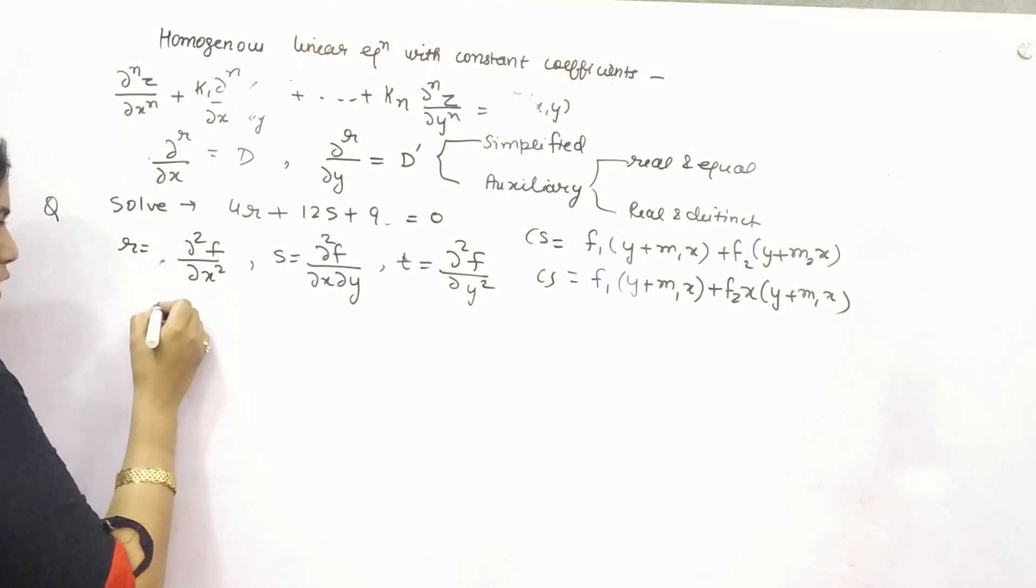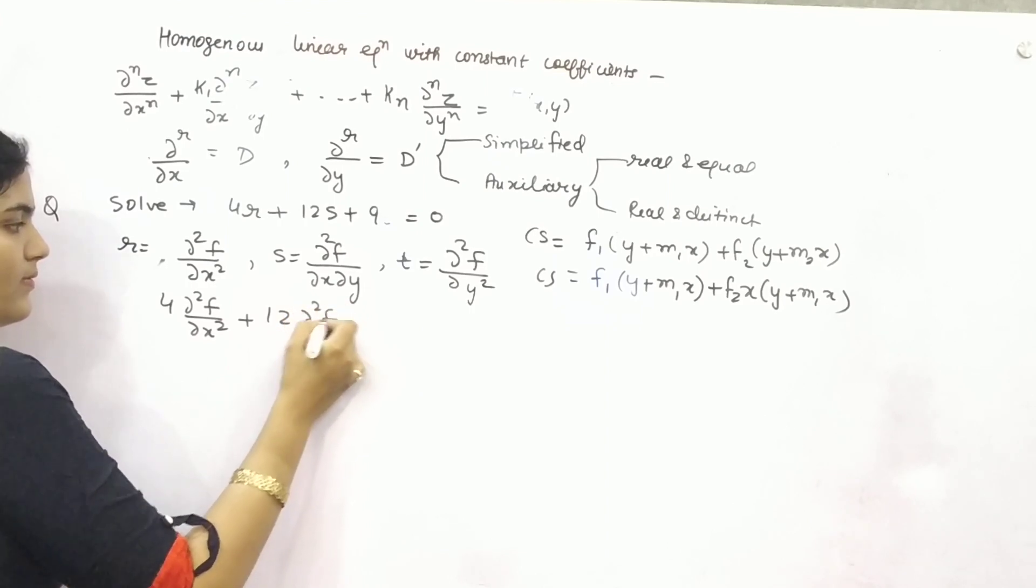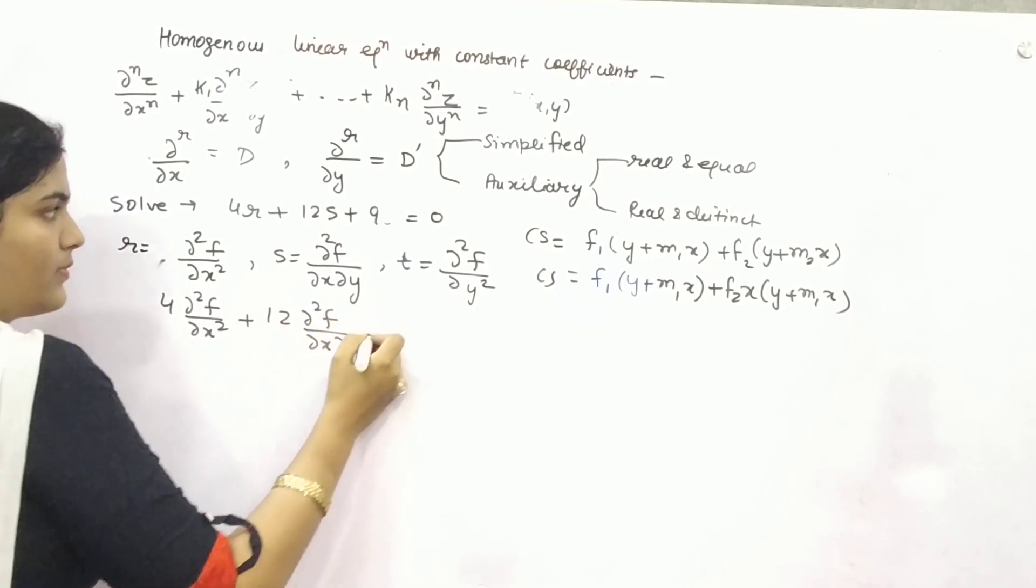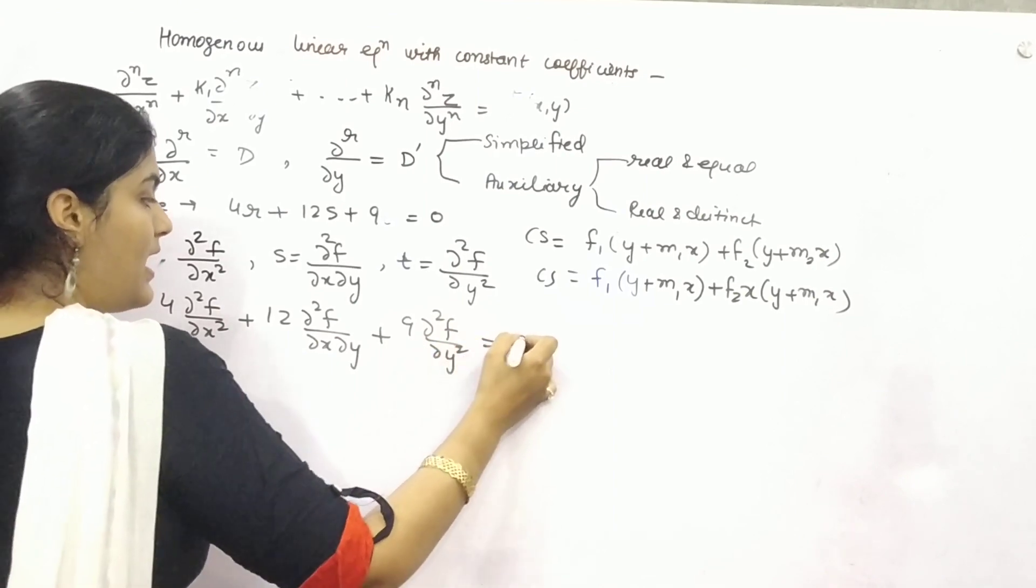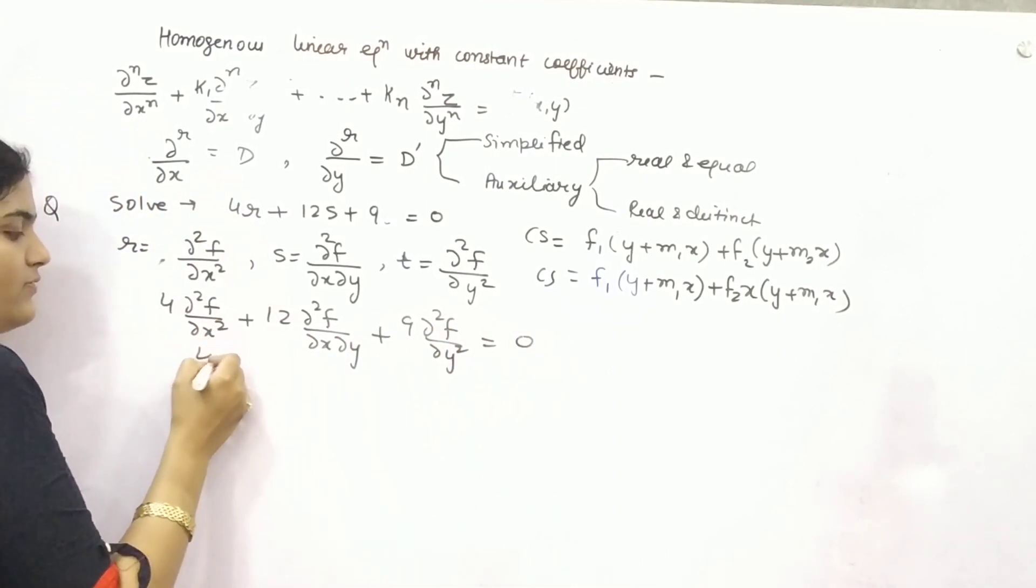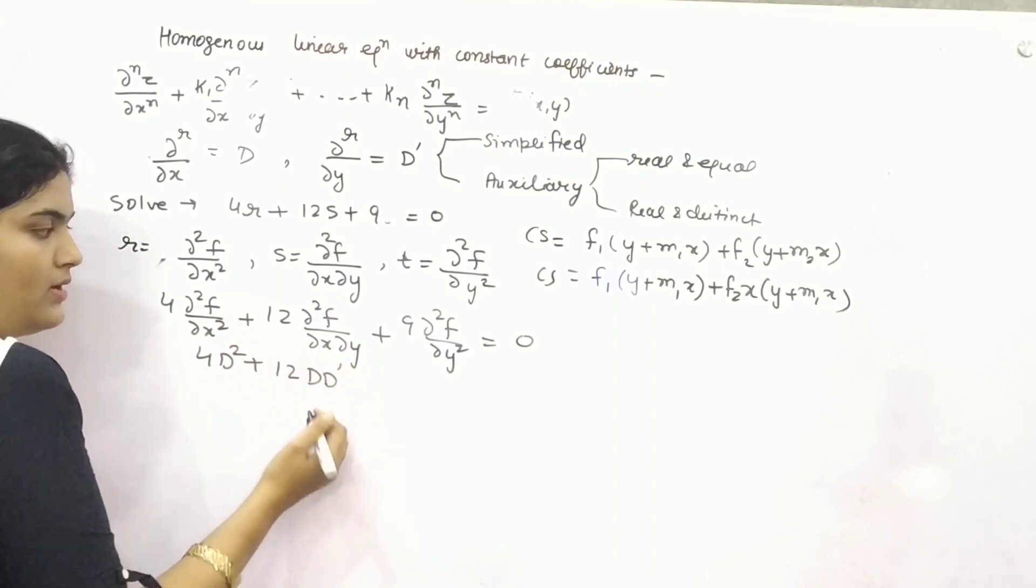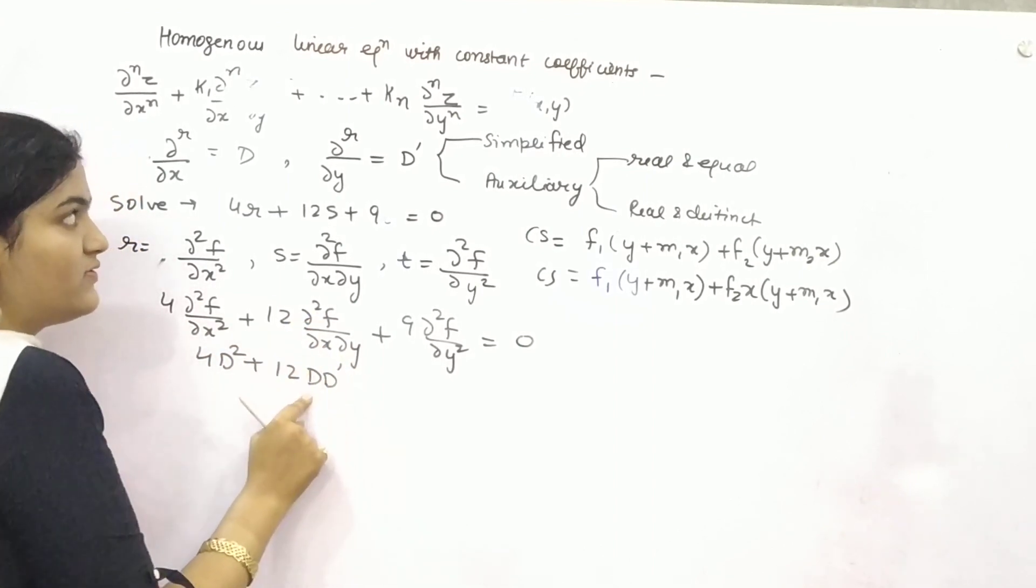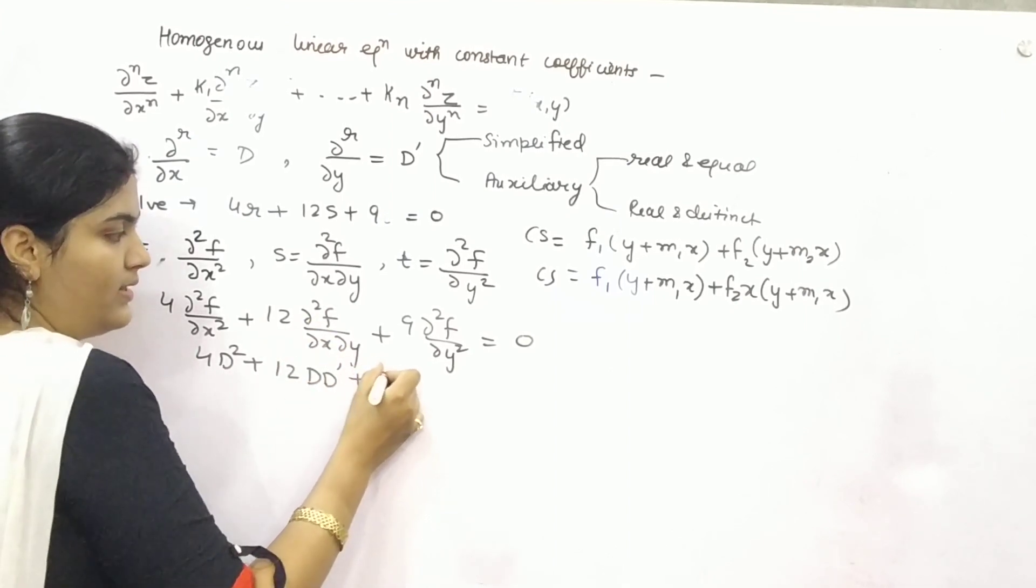This will be in the form of 4, 12, 9. Now, you can write it as 4d square, 12d d dash, because with respect to x it will be d, but with respect to y it will be d dash, plus 9.